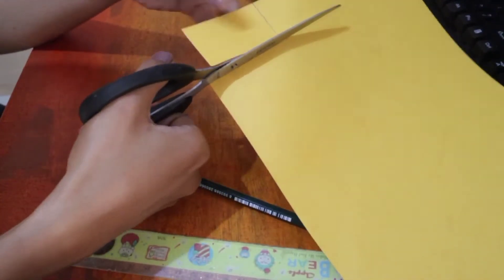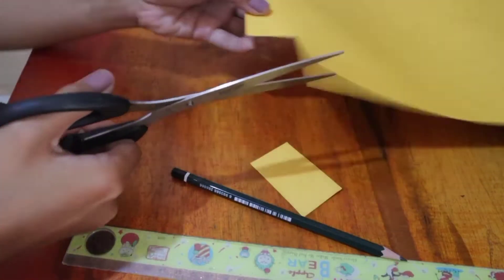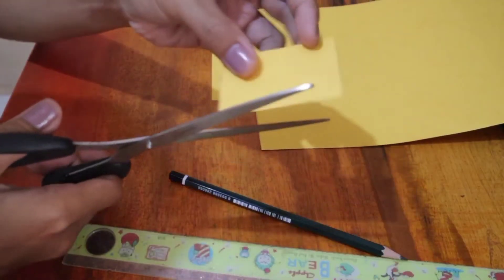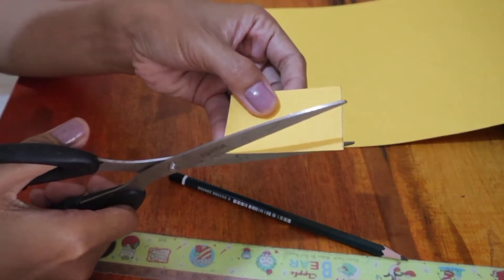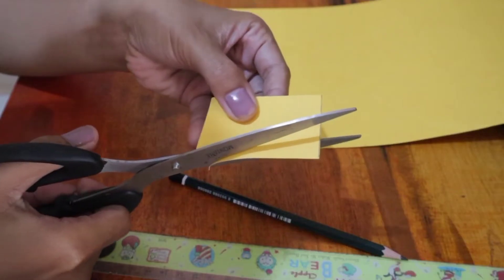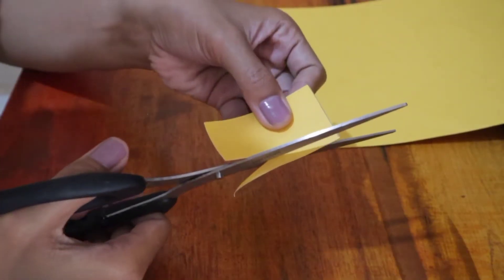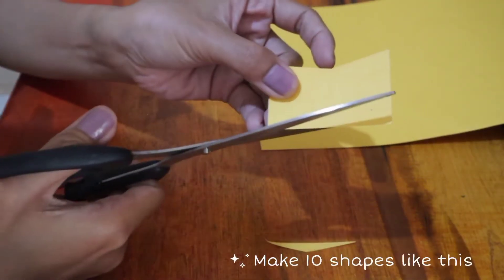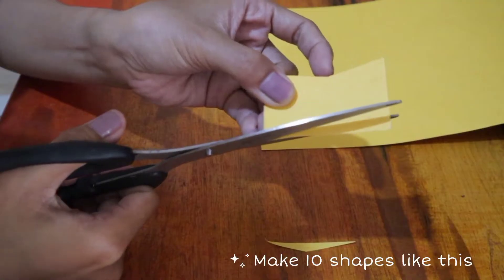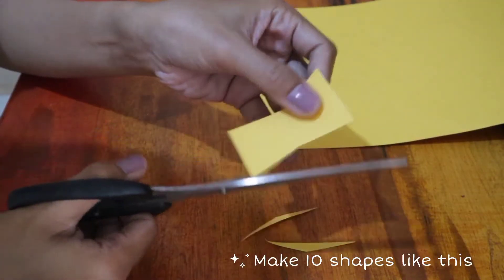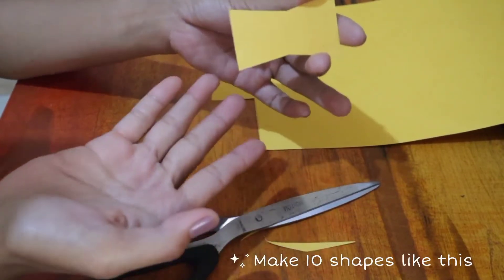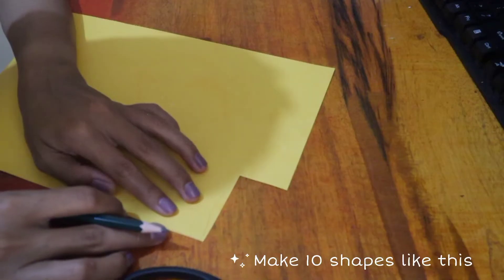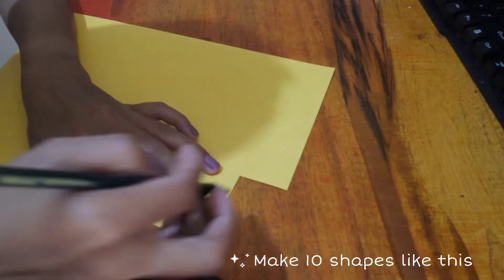Cut the rectangle. Okay, next we cut it like this. Do the same on the other side. All right, it will be like this. And because we need ten, so you can use it to make nine more shapes like this.